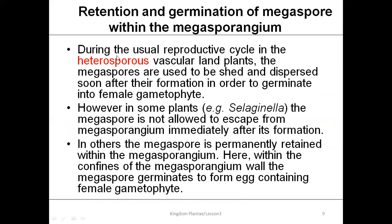During the usual reproductive cycle in heterosporous vascular plants, the megaspores were shed and dispersed soon after formation in order to germinate independently. However, in some plants like the Lycopsida, Selaginella, and Canada, the megaspore was not immediately dispersed. In others, the megaspore is permanently retained within the megasporangium.